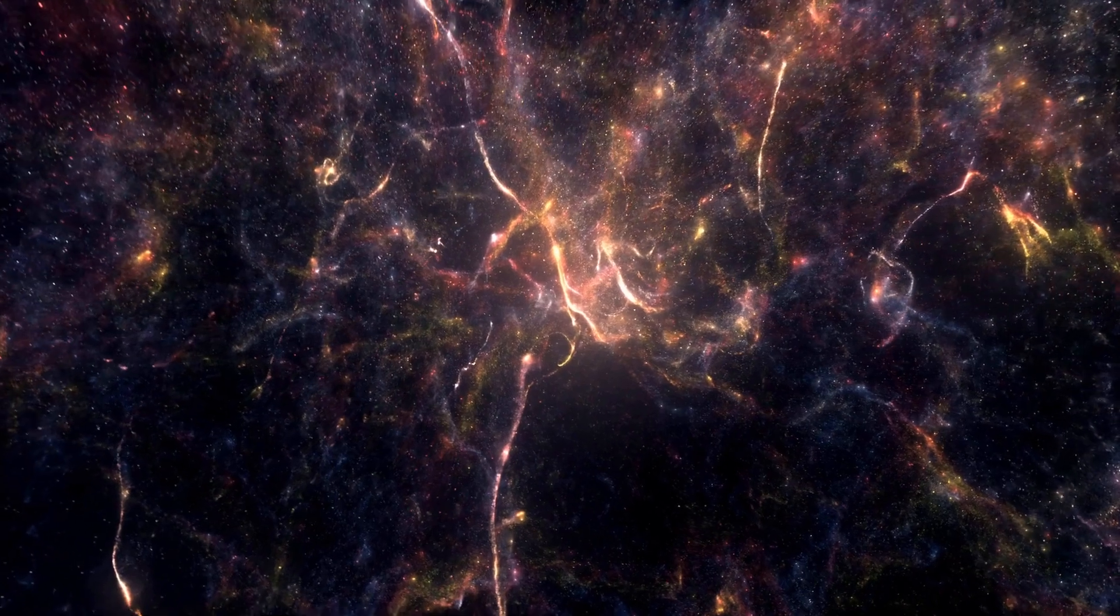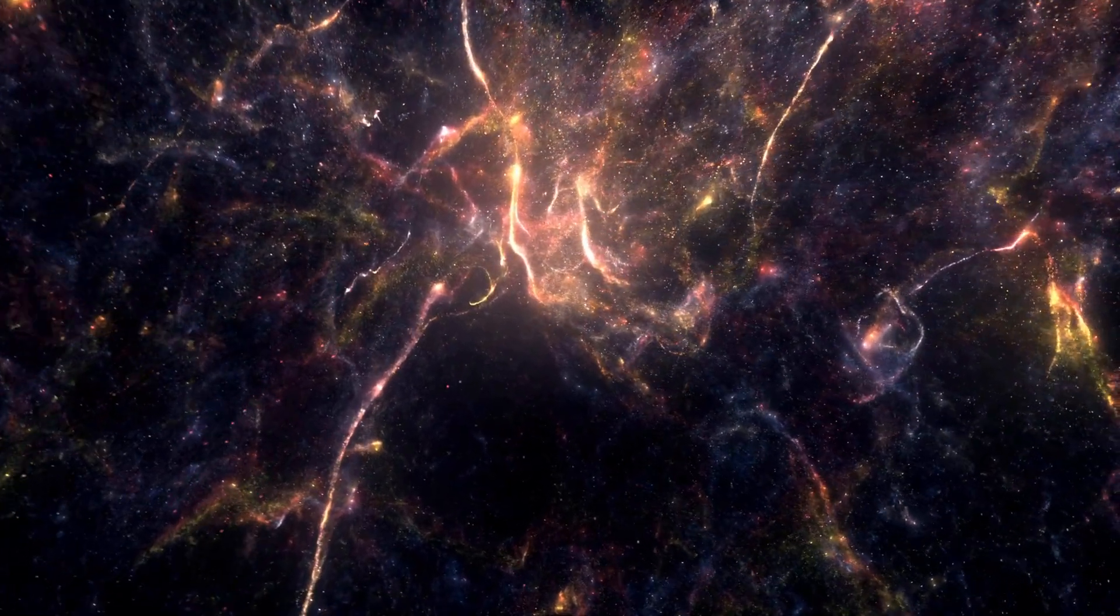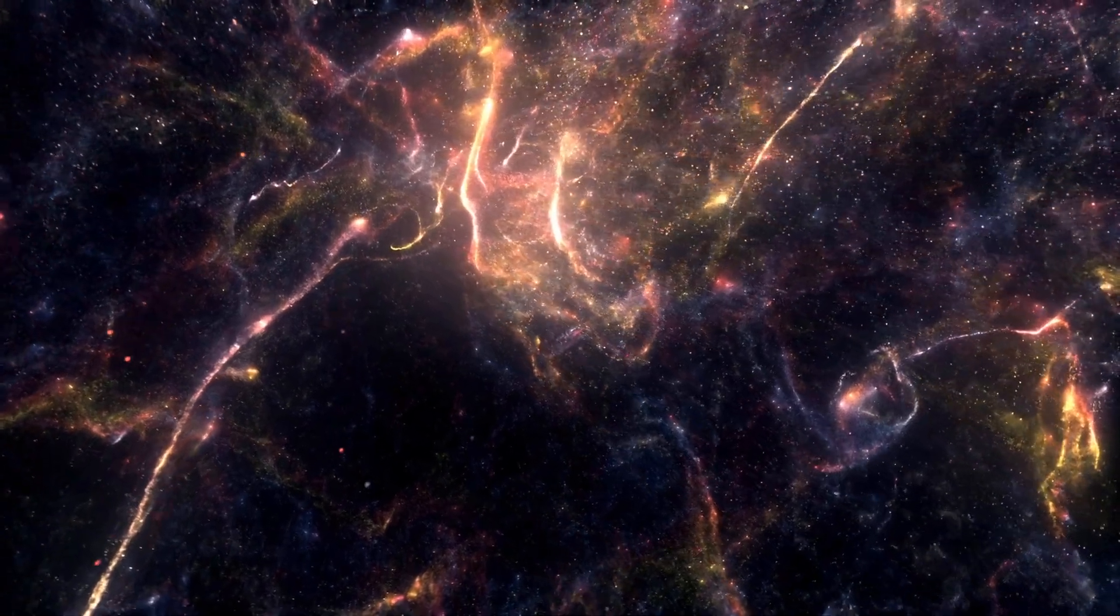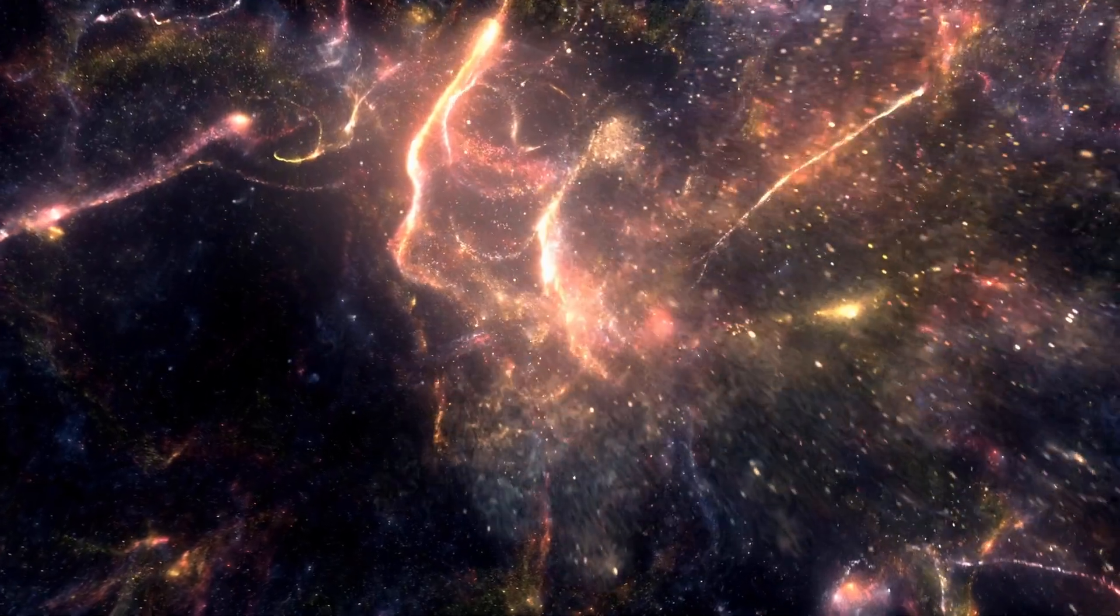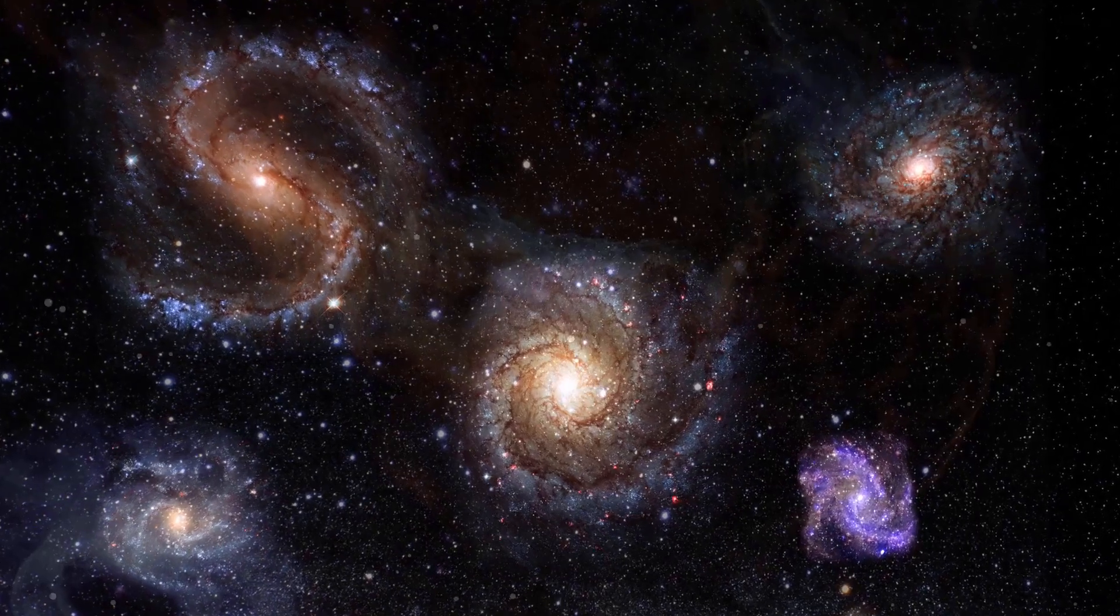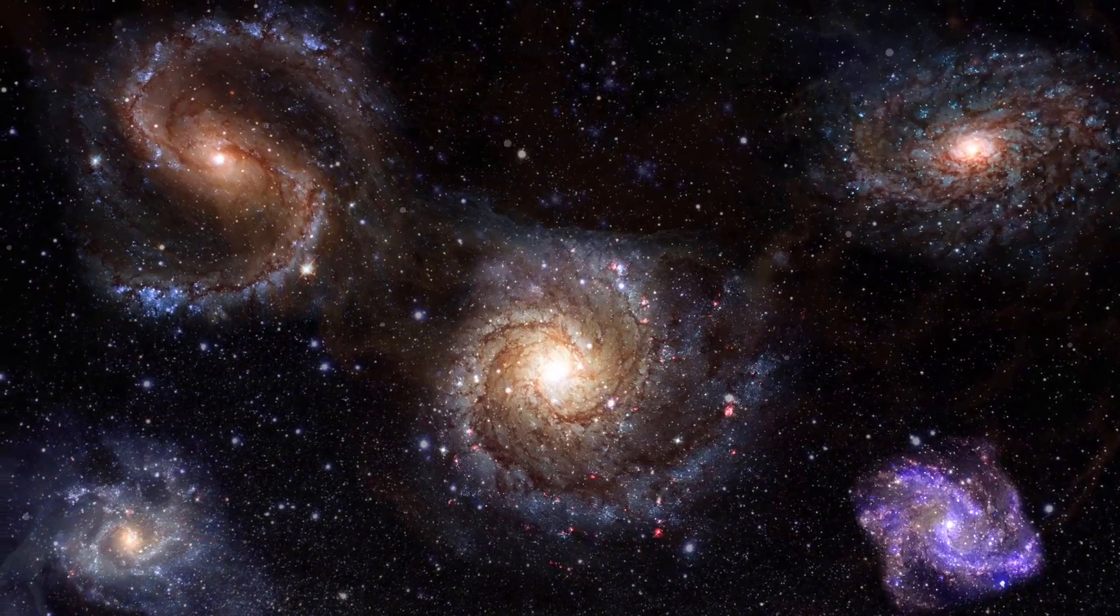When a black hole forms in a collapsing massive star, it reaches a point of infinite density, known as a singularity, where the laws of physics, as we currently understand them, break down. The singularity becomes hidden behind the black hole's event horizon, an invisible boundary beyond which nothing can escape, not even light.